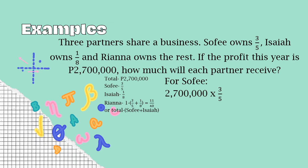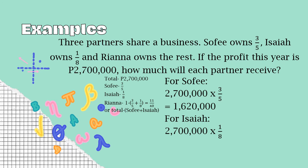Let's see on the next slide how we will do it. For Sophie, you just have to multiply 2,700,000 by 3/5, and we would get 1,620,000 — that is the 3/5 of their money, so that is what goes to Sophie. The same procedure for Isaiah: 2,700,000 times 1/8, since he owns 1/8, and that gives us 337,500.